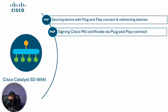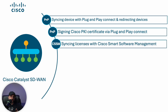Another well-known and important function of smart accounts and virtual accounts in Catalyst SD-WAN is syncing and reporting Catalyst SD-WAN licenses to Cisco's Smart Software Management, or CSSM, portal. This is done through the SD-WAN Manager's license management page, where the associated licenses for the routers are reported to the CSSM portal via the selected smart account and virtual account.